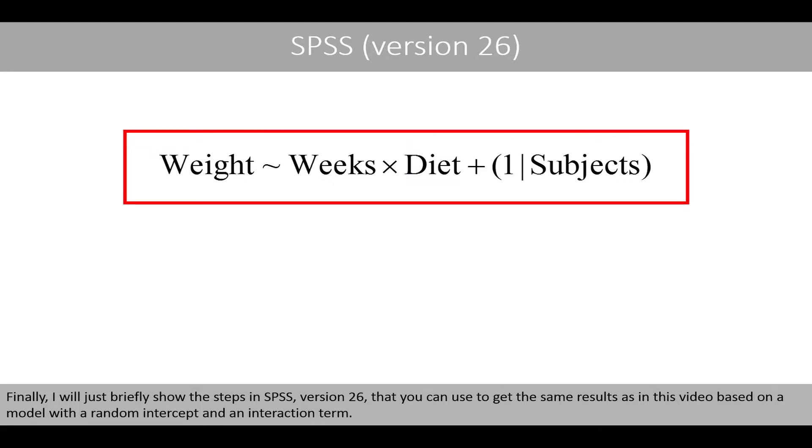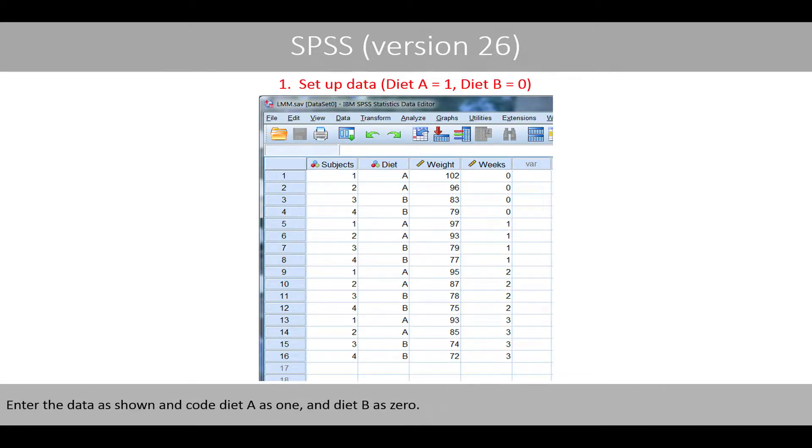Finally, I will just briefly show the steps in SPSS version 26, that you can use to get the same results as in this video, based on a model with random intercepts and an interaction term. So, enter the data as shown here, and code diet A as 1, and diet B as 0.